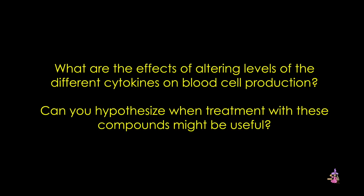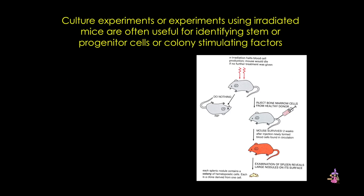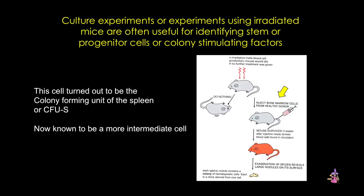Let's look at how different progenitors and factors were first identified. Here's an early experiment in the hunt for the hematopoietic stem cell, examining whether a specific cell could form all blood cells. A mouse is irradiated, which destroys cell production in the marrow and usually kills the mouse. However, if specific bone marrow cells were injected into a healthy irradiated mouse, it survived, and new blood cells appeared in the circulation. When they examined the spleen, they found nodules — each containing colonies of stem cells that turned out to be clones derived from a single cell. This turned out not to be the hematopoietic stem cell, but an intermediate progenitor known as the colony-forming unit of the spleen. This type of experiment, along with culture experiments, continues to be used to understand the signals controlling different lineages.